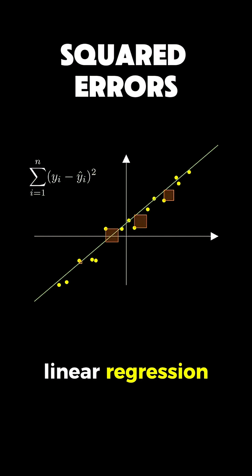This is the key insight of linear regression. We want to find a slope and an intercept that minimizes the sum of squared errors.